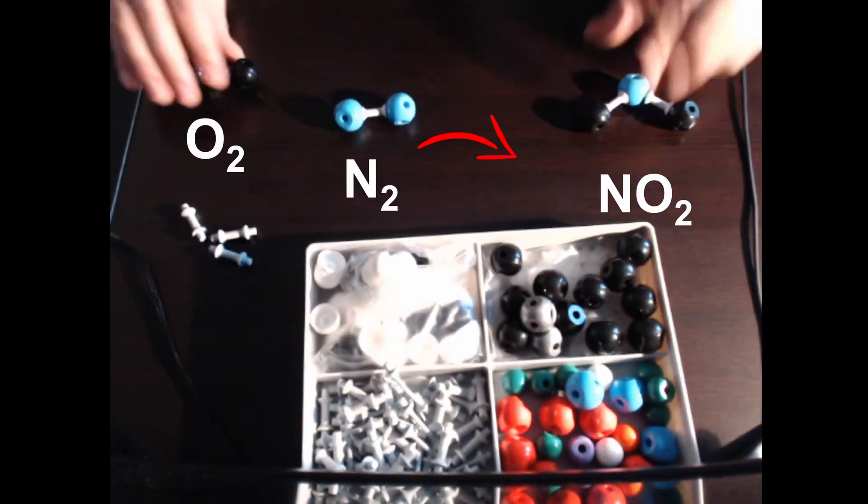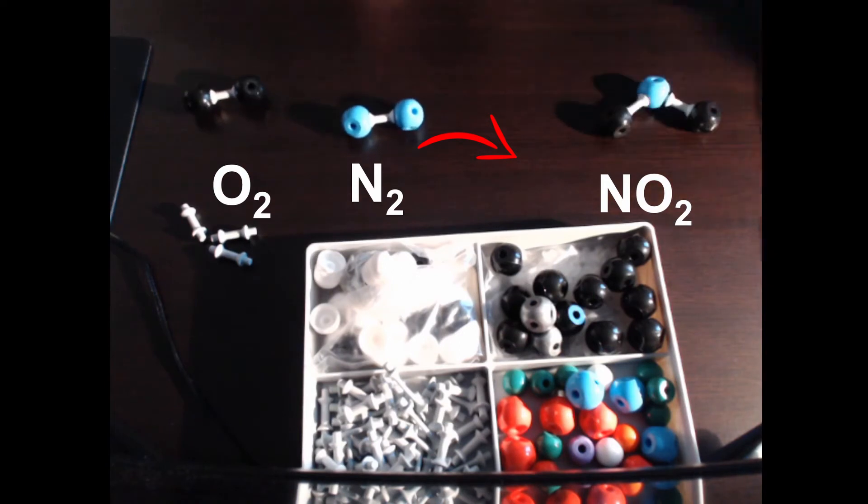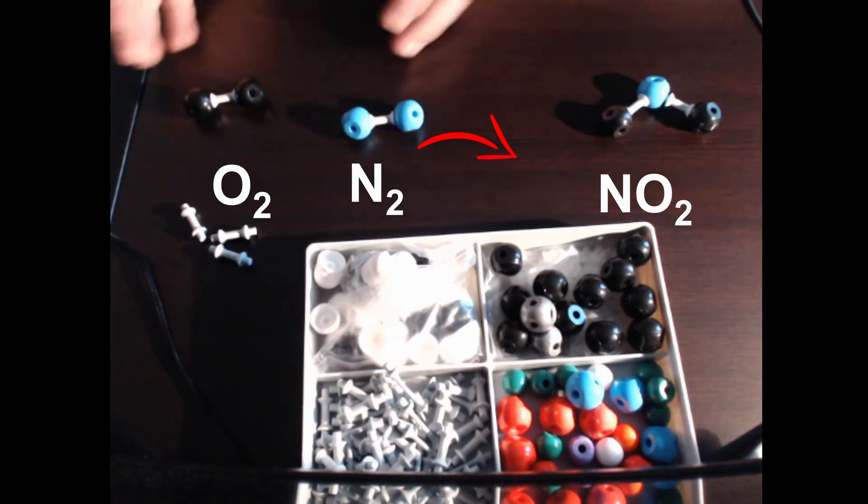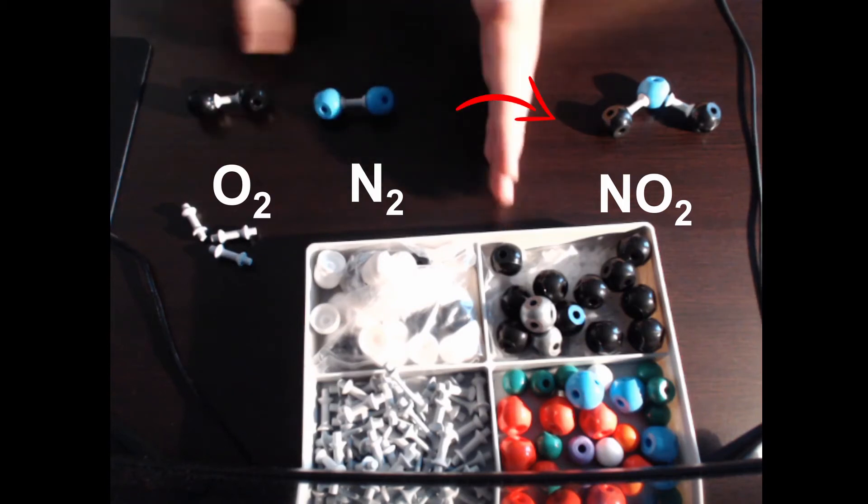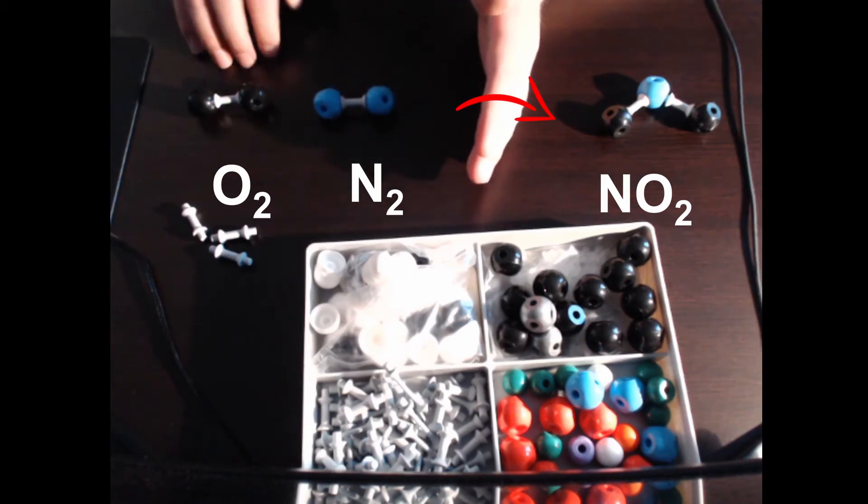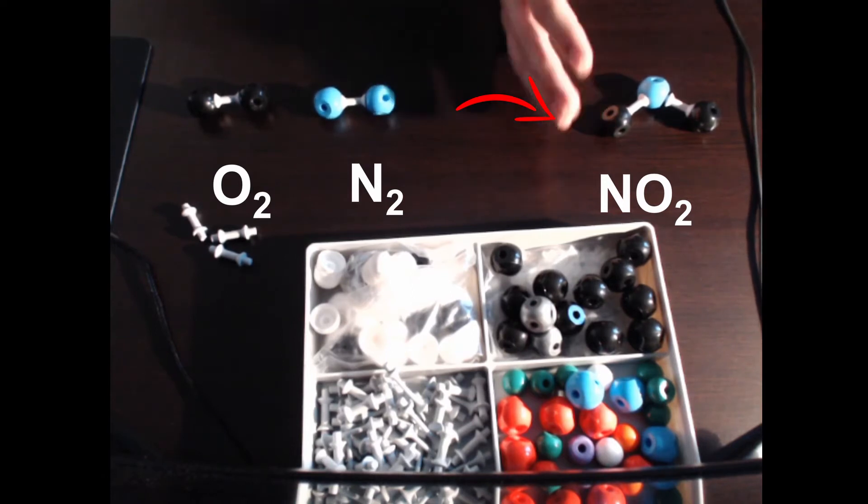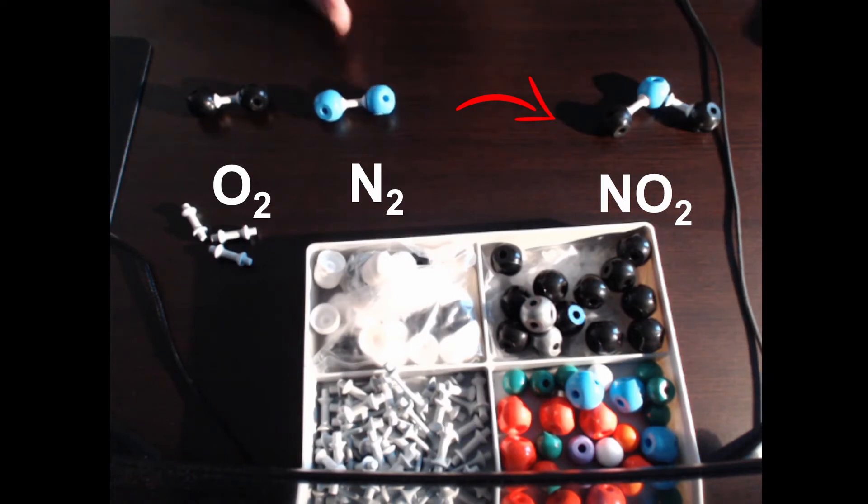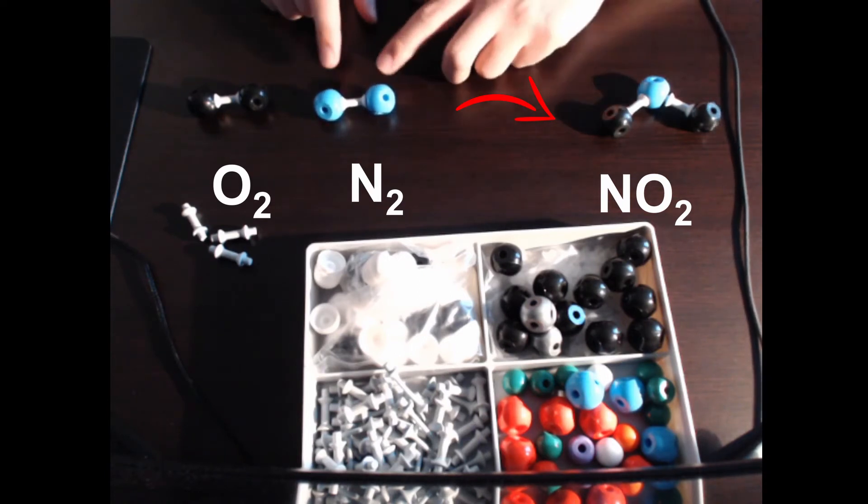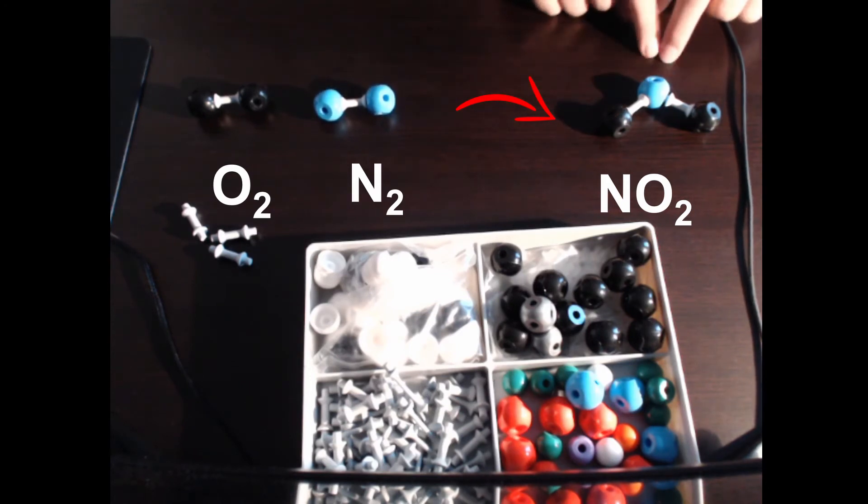If we're operating by the law of conservation of matter, which is one of the fundamental laws of the universe, the number of atoms of both blue nitrogen and black oxygen needs to be exactly equal to the number of atoms on this side. We cannot create or destroy, as you can see we've lost somewhere in this process one of the nitrogen atoms. If there's two here, there also needs to be two on this side as well.